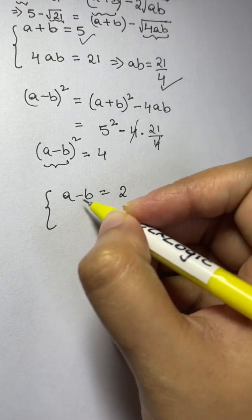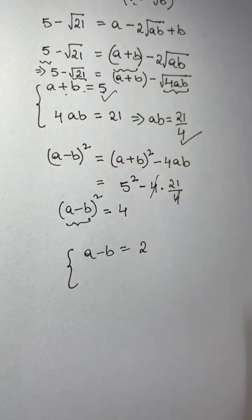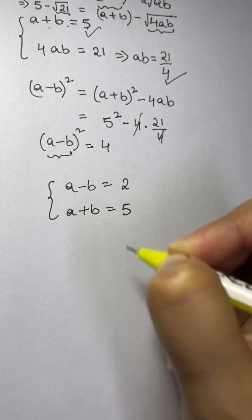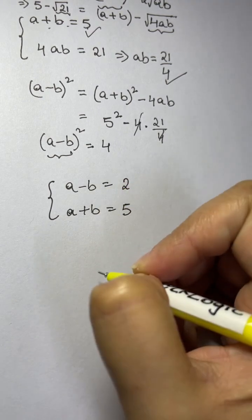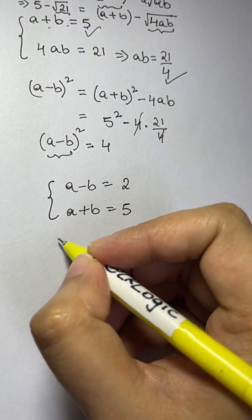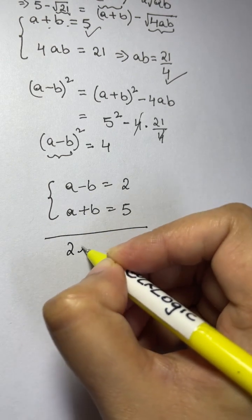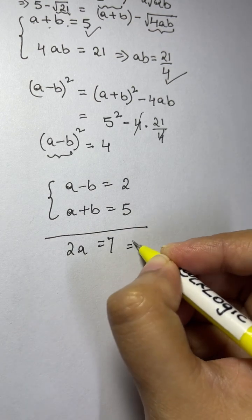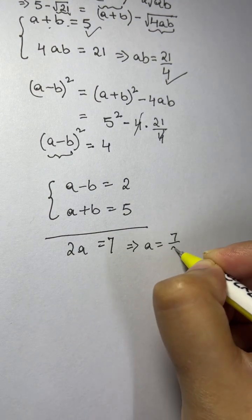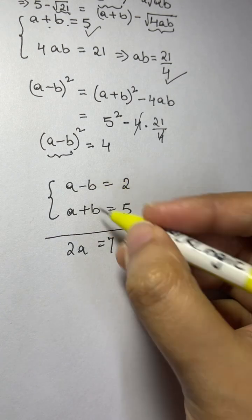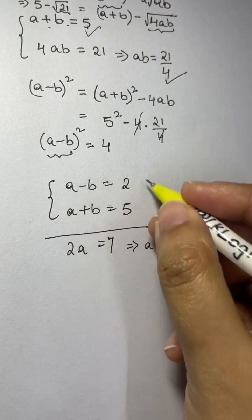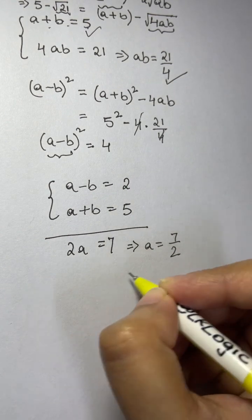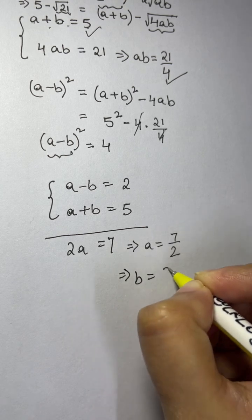We now have two equations: a - b = 2 and a + b = 5. Using the elimination method, adding them gives 2a = 7, so a = 7/2. Subtracting gives 2b = 3, so b = 3/2.